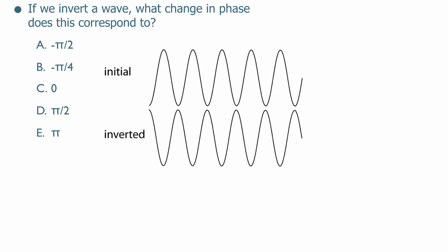If we invert a wave, what change in phase does this correspond to? You've been dealing with phase in the DLs so far, and it's just that little number that appears called phi.